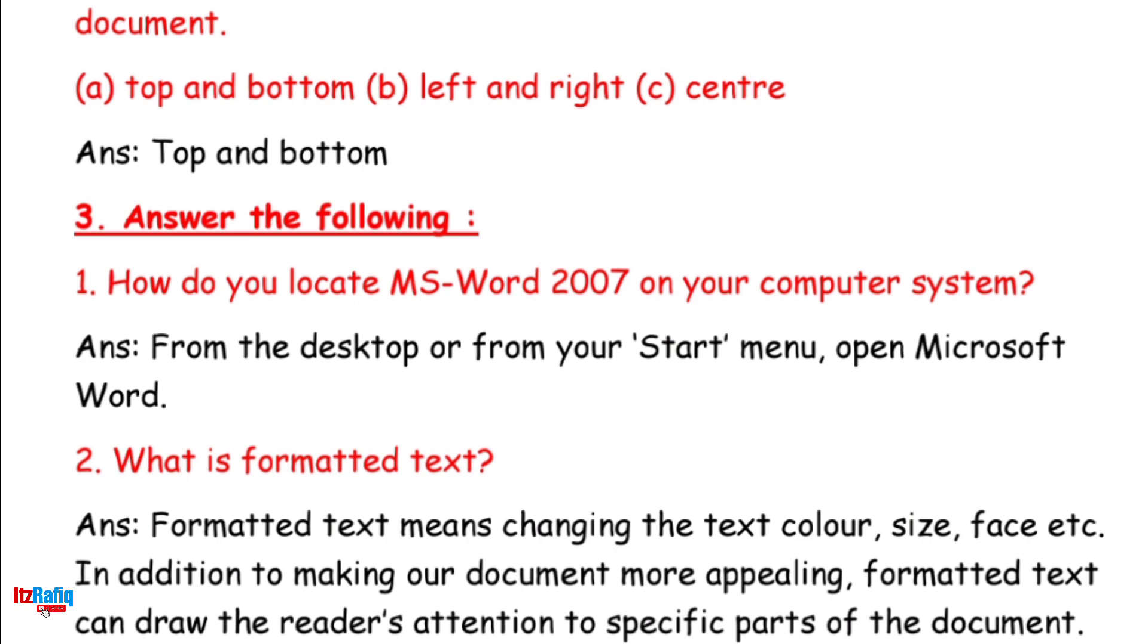3. Answer the following. 1. How do you locate MS Word 2007 on your computer system? Answer: From the desktop or from your Start Menu, Open Microsoft Word.